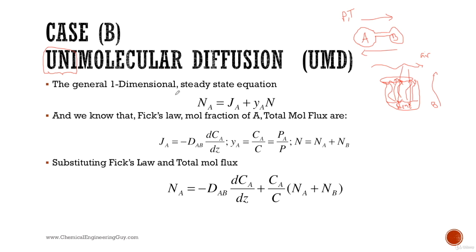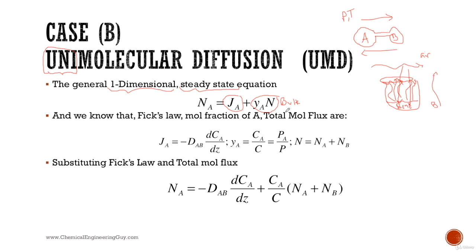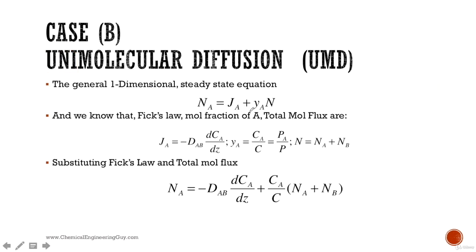Let's start with one-dimensional steady-state diffusion. For a binary system, we can model species A as follows: the total molar flux of A equals the molar flux of A due to diffusion plus the molar flux of A due to bulk movement. We need to consider bulk movement because it is driven by the other species.